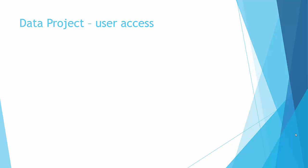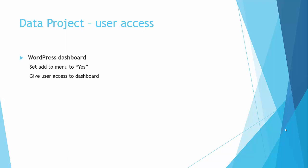First of all, you need to give users access to your data project pages. There are two ways to do this. The first is to give users access to your WordPress dashboard — this means you have to set the 'add to menu' item of the data project to yes, otherwise the data project will not be shown in the dashboard menu. The second option is to use the shortcode WPDADieHard, which you can add to your page, but you have to make sure that you secure your page.